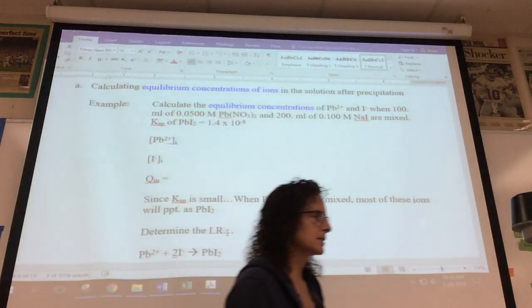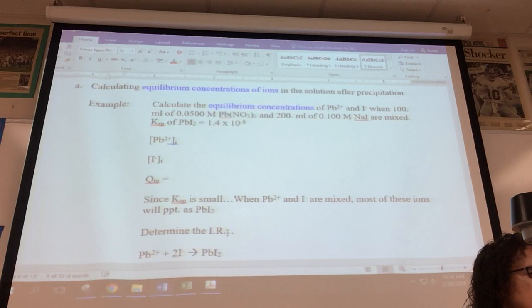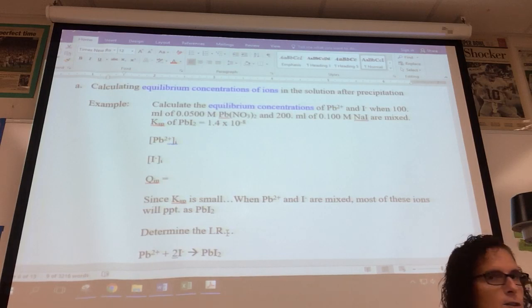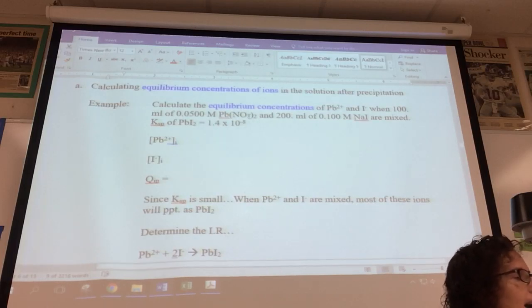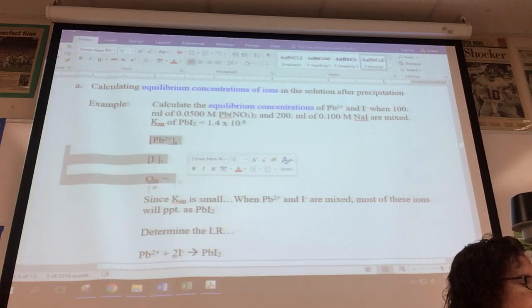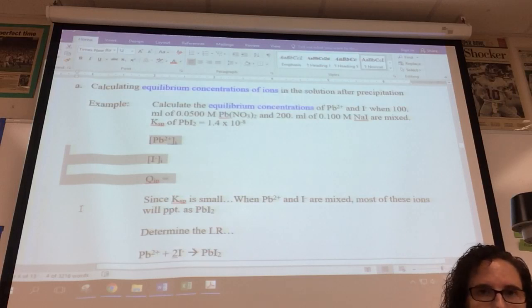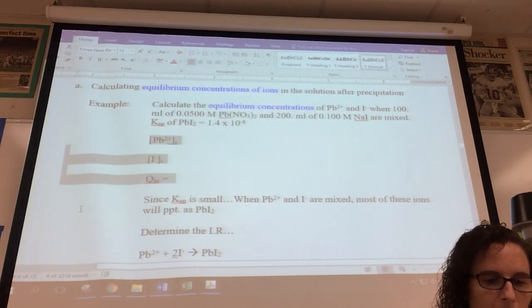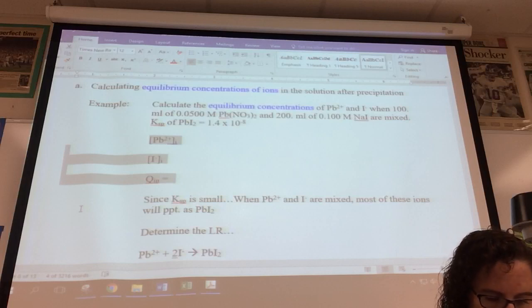What we're looking at here is calculate equilibrium concentrations of ions in the solution after precipitation. So if precipitation occurs, QIP must be greater than KSP. Calculate equilibrium concentrations of these two ions when 100 mils of 0.05 molar lead 2 nitrate and 200 mils of 0.1 molar sodium iodide are mixed. The KSP of lead 2 iodide is provided. I want you to try and do that. You already know how to do it. And then I'll walk you through the new stuff, but let's make sure that you can do what we covered the first half.